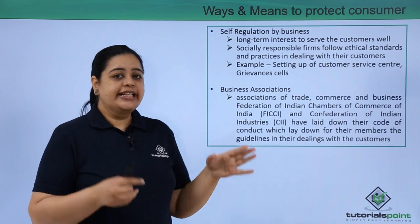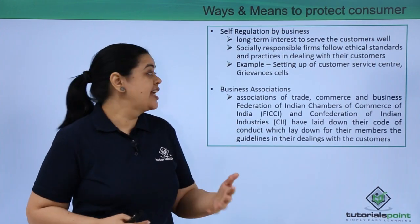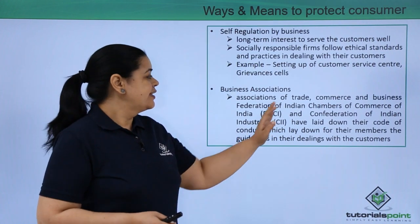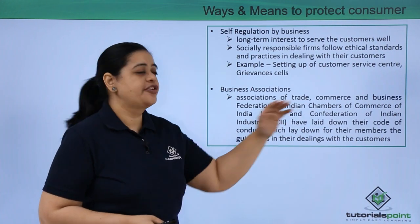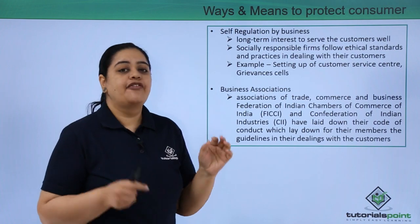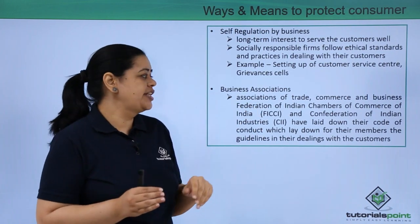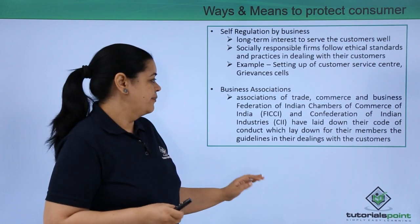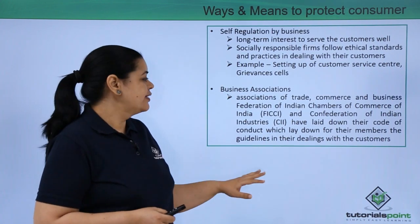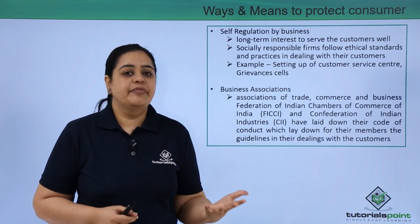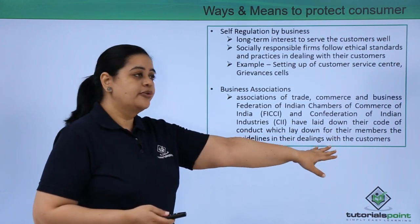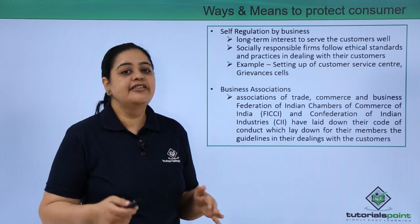The next method is business associations. In India we have various business associations which help to protect consumers, such as the association of trade, commerce and business, FICCI — the Federation of Indian Chambers of Commerce of India — and CII, the Confederation of Indian Industries. All these associations have laid down rules, regulations, and a code of conduct for their members. If you are a member and fail to follow that code of conduct, they will remove you and there may be other consequences. You have to follow the rules laid down for dealing with customers.